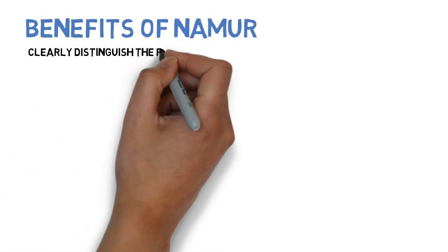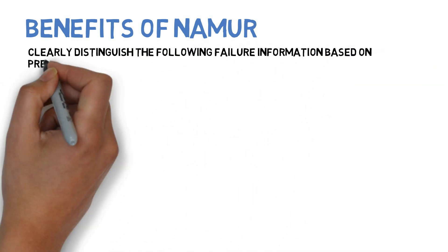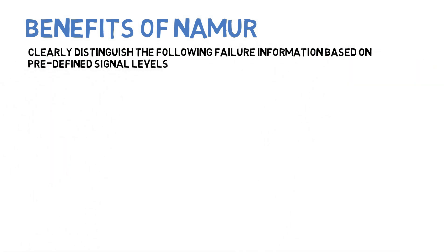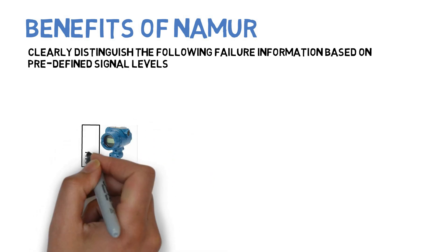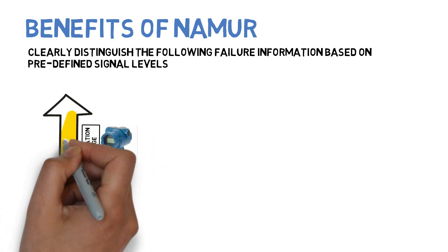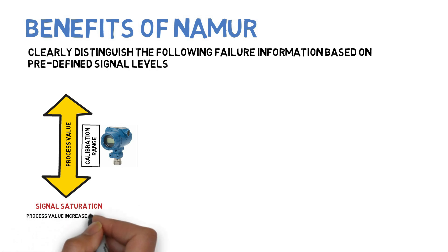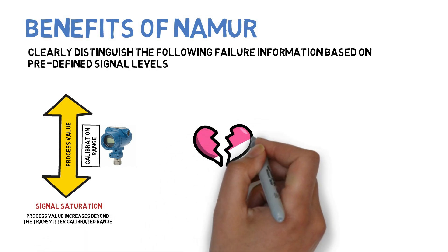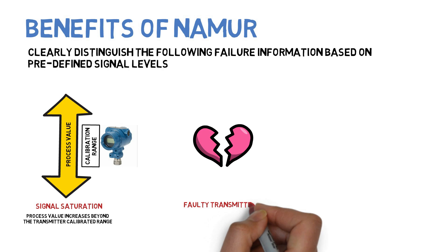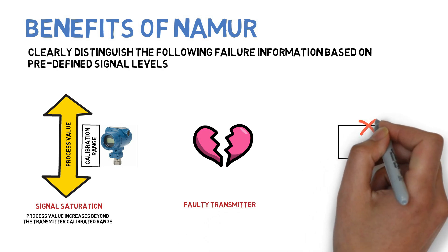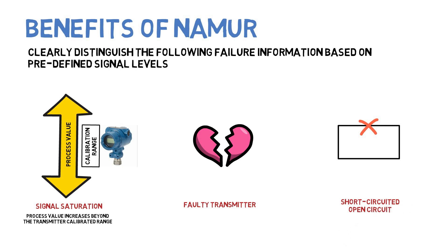The benefits of NAMUR are that we can clearly distinguish the following failure information based on predefined signal levels: when the transmitter goes into saturation due to the increase in process variable value beyond the transmitter calibrated range, and when the transmitter becomes faulty, whether the wires are short-circuited or in open circuit.